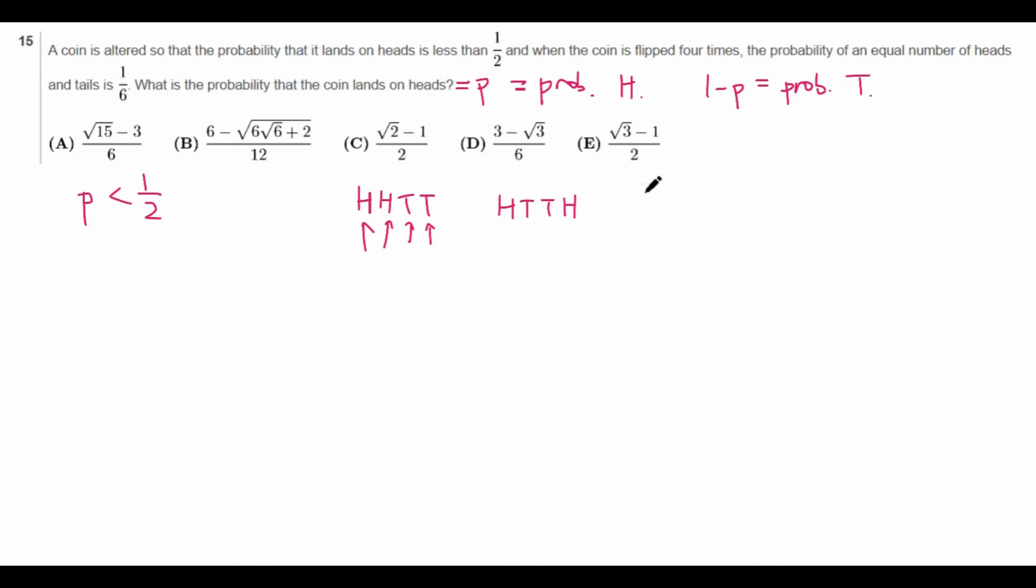And the number of ways to place these heads is, out of four spaces, we choose two spaces, which is equal to 4 factorial over 2 factorial 2 factorial, which is just equal to 6. So there are six total ways.